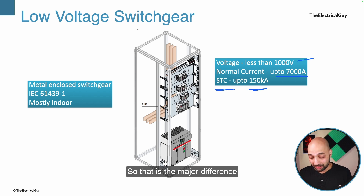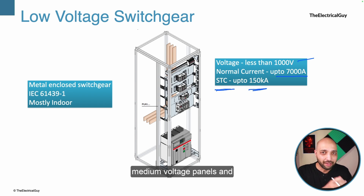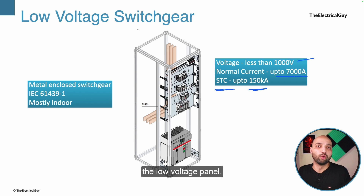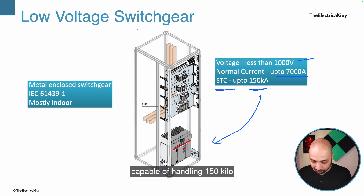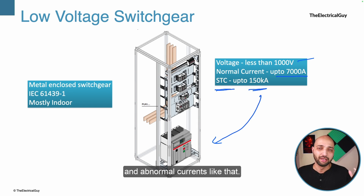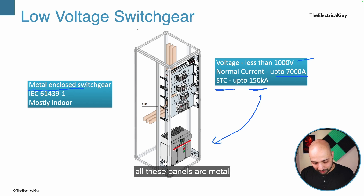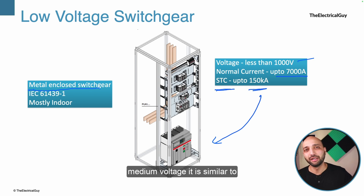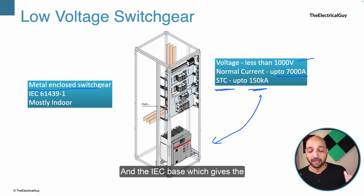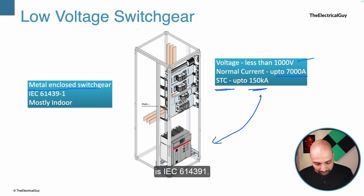That is a major difference between medium voltage and low voltage panels. There are breakers capable of handling 150 kA, 120 kA, and 83 kA abnormal currents. All these panels are metal enclosed switchgear, similar to what we have seen in medium voltage. The IEC standard that gives general guidelines for low voltage switchgear is IEC 61439-1, and these panels are mostly indoor panels.